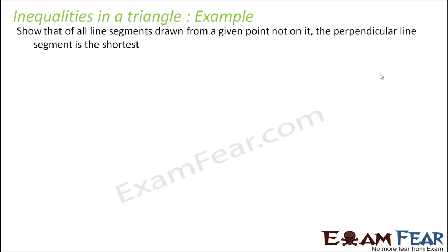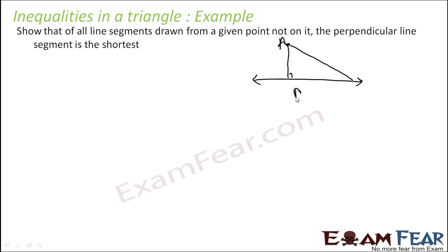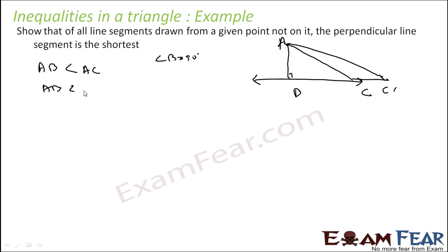Show that all the line segments drawn from a given point, not on it, to the line — the perpendicular segment is shortest. From this point we are drawing one perpendicular line and we are drawing a normal line. Let's mark this: points A, B, C. We have to prove that AB is shorter than AC, where angle B is 90 degrees. We have to prove that AB is shortest.